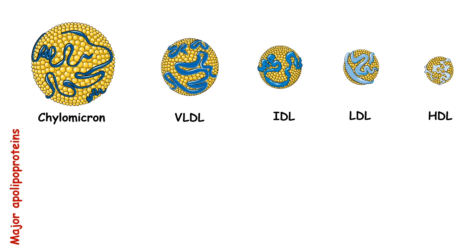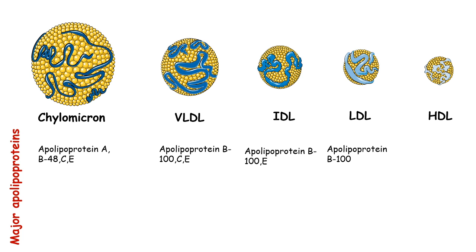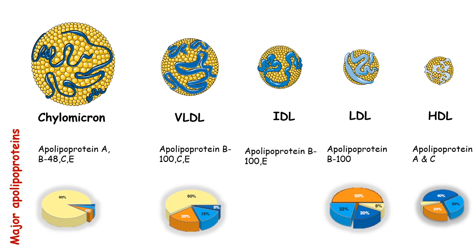Let's talk about the major apolipoproteins present in these particles. Chylomicron has apolipoprotein A, Apo B48, C, and E, whereas VLDL has apolipoprotein B100 — that is the key difference between VLDL and chylomicron. VLDL also has apolipoprotein C and apolipoprotein E. IDL and LDL both have Apo B100, and in HDL we have the majority of apolipoproteins.